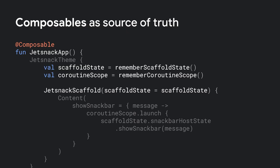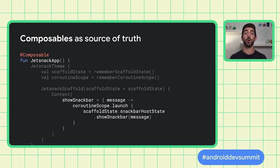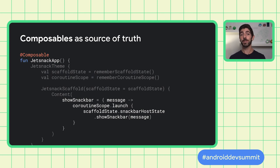If the UI element state to handle is simple, it could be placed in the composable itself. In this example, the JesnackApp composable owns the scaffold state, which contains mutable properties. All interactions with it should happen in this composable. Otherwise, if we pass it to other composables, they could mutate its state — violating the Single Source of Truth principle and making tracking down bugs more difficult.